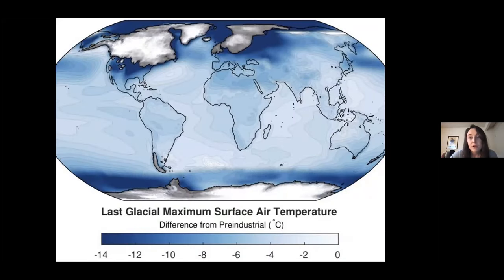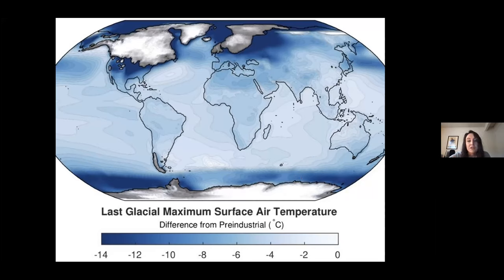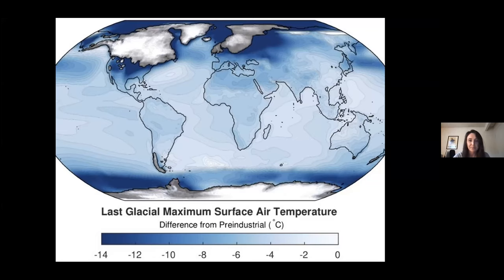Before I do that, I want to give a quick overview of my research field. I am a paleoclimatologist, which in plain speak means I study the Earth's climate history. I spend a lot of my time thinking about what Earth's climate conditions were like during the last ice age, and my research specifically looks at changes in the North American continent during that time.